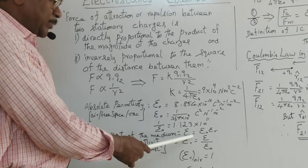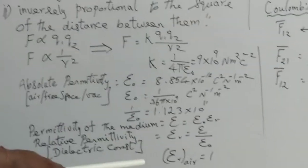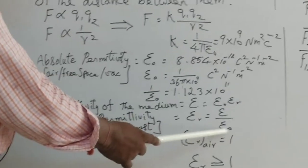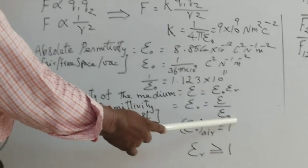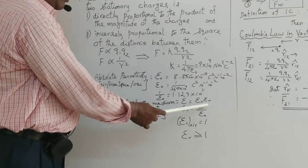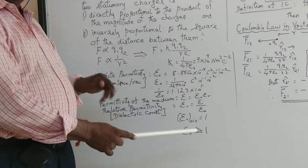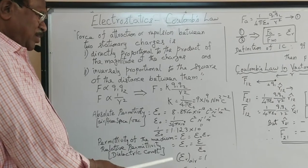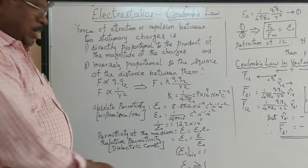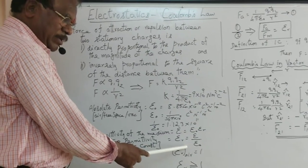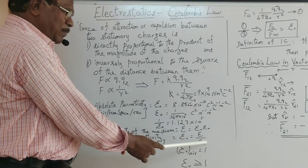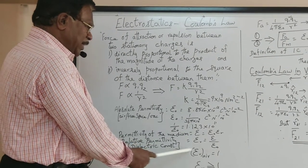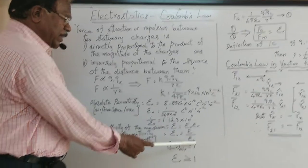Relative permittivity εr can be used to determine ε, because the permittivity of any medium is the product of absolute permittivity and relative permittivity: ε = εr × ε₀. The relative permittivity εr is the ratio of permittivity of the medium to permittivity of free space: εr = ε/ε₀. For example, εr of water is 80, so multiplying 80 by 8.854 × 10⁻¹² gives the permittivity of water. Relative permittivity has no unit because it is a ratio of the same quantities.